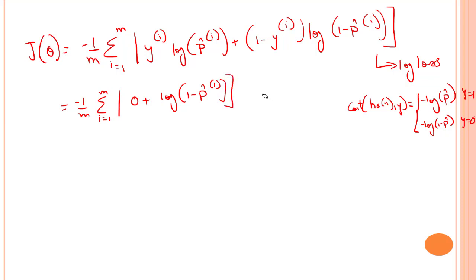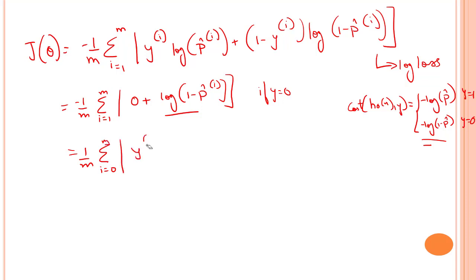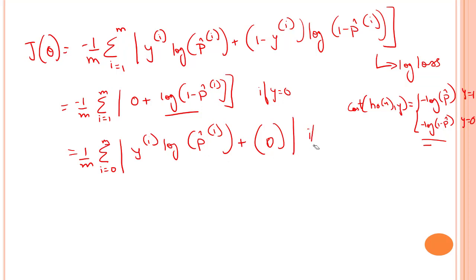That is basically the same thing for y equals 0. Similarly, for y equals 1, we get the first term y(i) log(p̂(i)), and the second term (1 minus 1) becomes 0. So we get exactly the same equation that we need — the two expressions are equivalent.